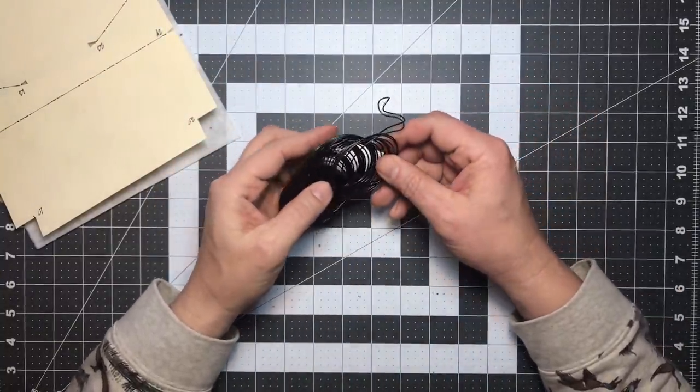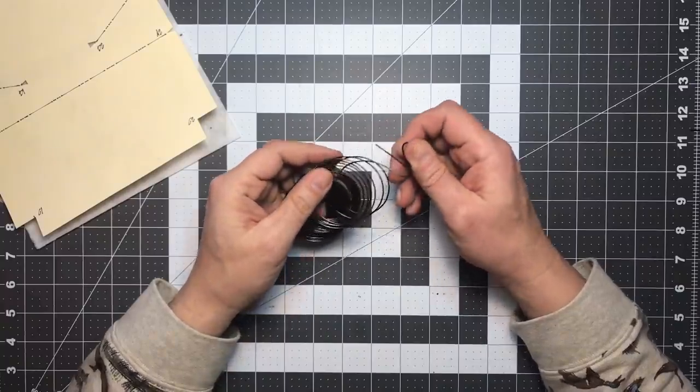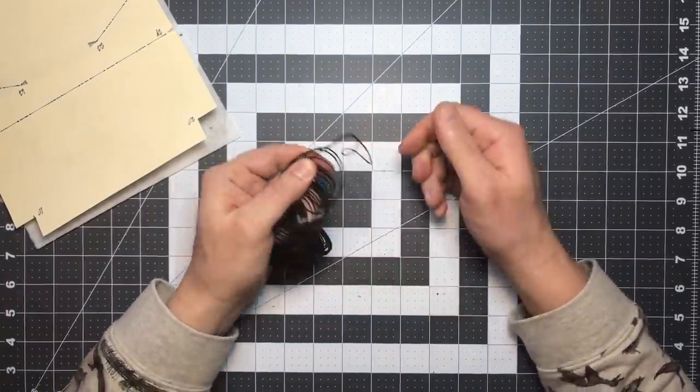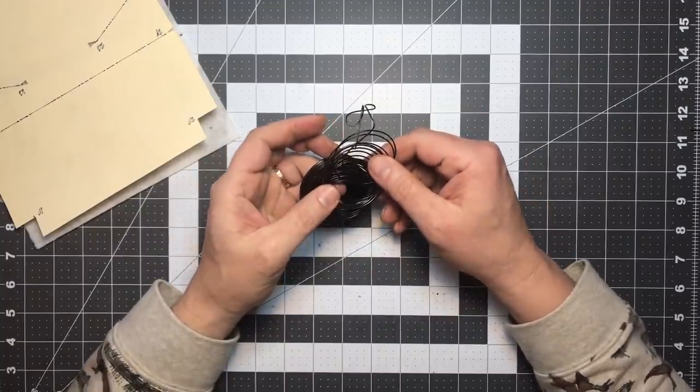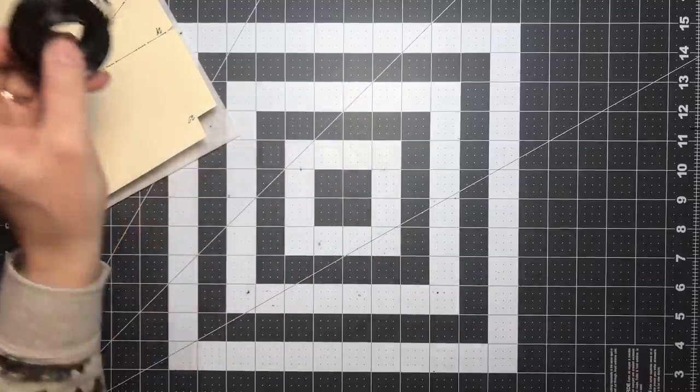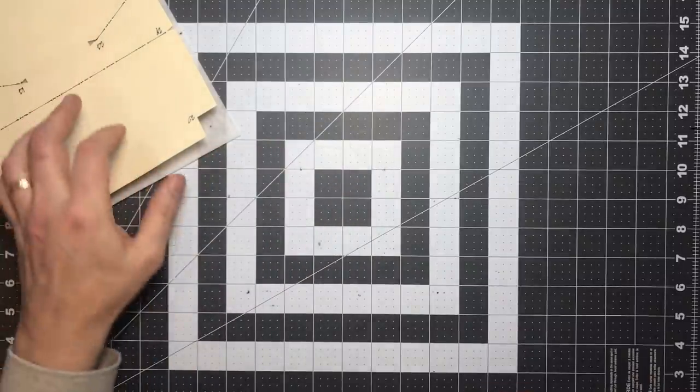This is 19 gauge annealed steel wire that works really well for this. It's flexible, but it also holds its shape really well if you twist it around. And you can find it at just about any hardware store for a couple of bucks for a spool like that. If you can't find it or you can't get it, a paper clip will work in a pinch.